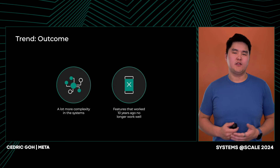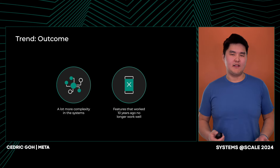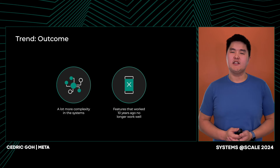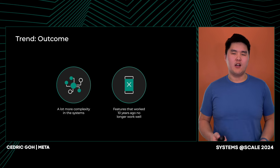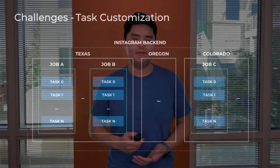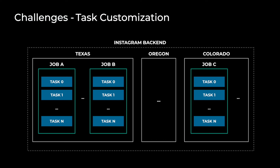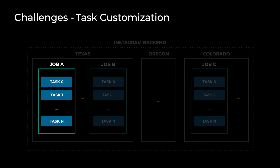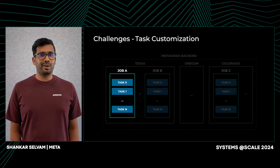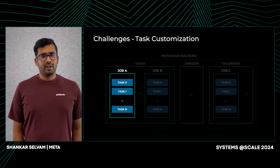Twine has evolved organically over the years to serve the wide range of workload types that exist at Meta, ranging from simple stateless services to more complex stateful and traffic services. Before jumping into task customization, let's review a few key terminologies. Services such as Instagram backend are deployed as Twine jobs in multiple data center regions to meet certain availability and latency requirements. Each Twine job composes of subunits known as Twine tasks, and these tasks run the application binaries on a container. Ideally, a Twine job composes of tasks that are all configured the same way and are homogenous. However, in reality, we often want some set of tasks to be configured differently compared to the rest of the job — we refer to this as task customization.